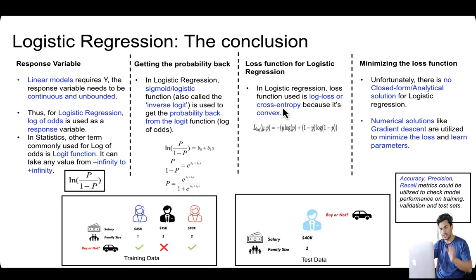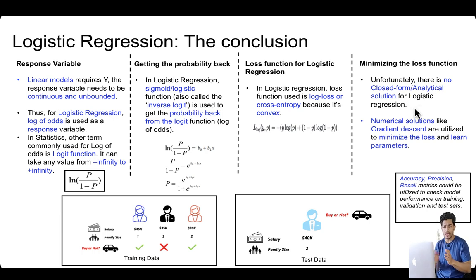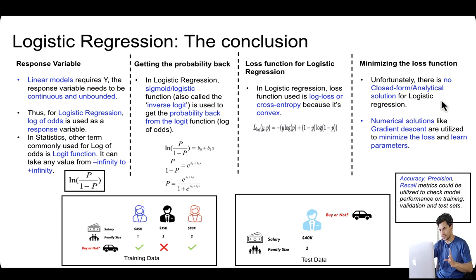The loss function used in logistic regression to learn the right probabilities is log loss (cross-entropy): minus y·log(p) minus (1 - y)·log(1 - p), where y is the actual true label and p is the predicted probability. When it's the positive class, the first term defines the loss; when it's the negative (zero) class, the second term defines the loss. Unfortunately we don't have a closed form analytical solution for logistic regression, so we solve it using numerical solutions like gradient descent.